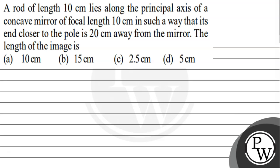Let's read the following question: A rod of length 10 centimeters lies along the principal axis of a concave mirror of focal length 10 centimeters, in such a way that its end closer to the pole is 20 centimeters away from the mirror. The length of the image is: 10 cm, 15 cm, 2.5 cm, or 5 cm.